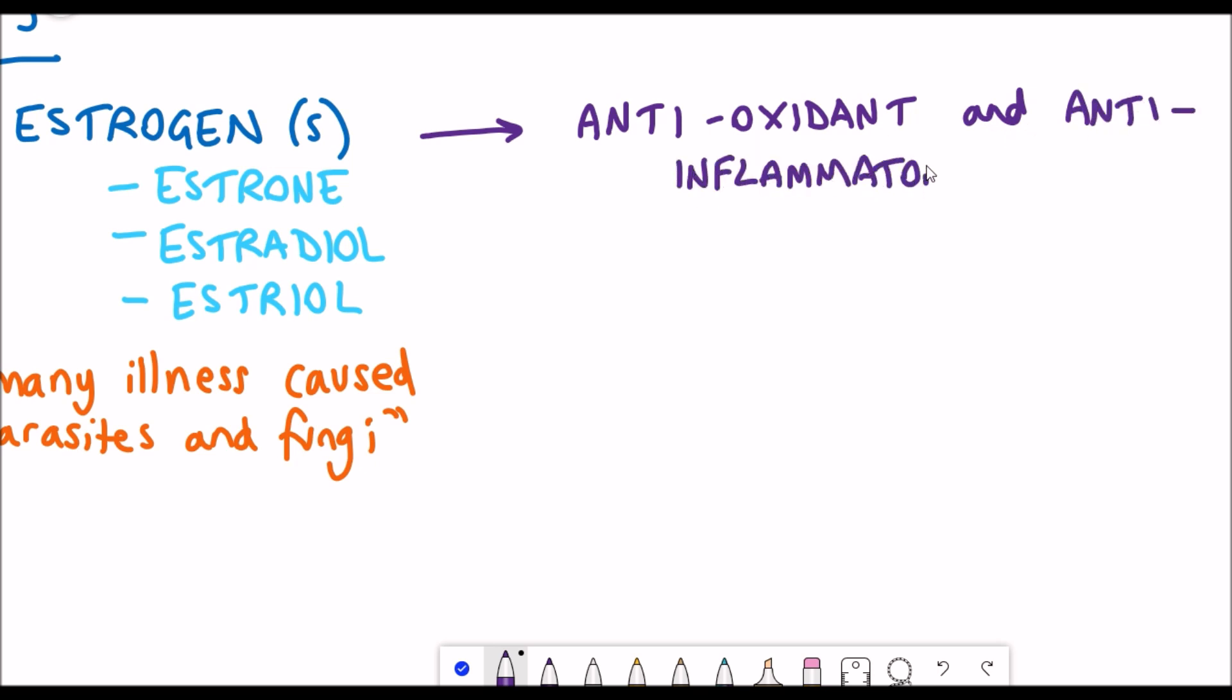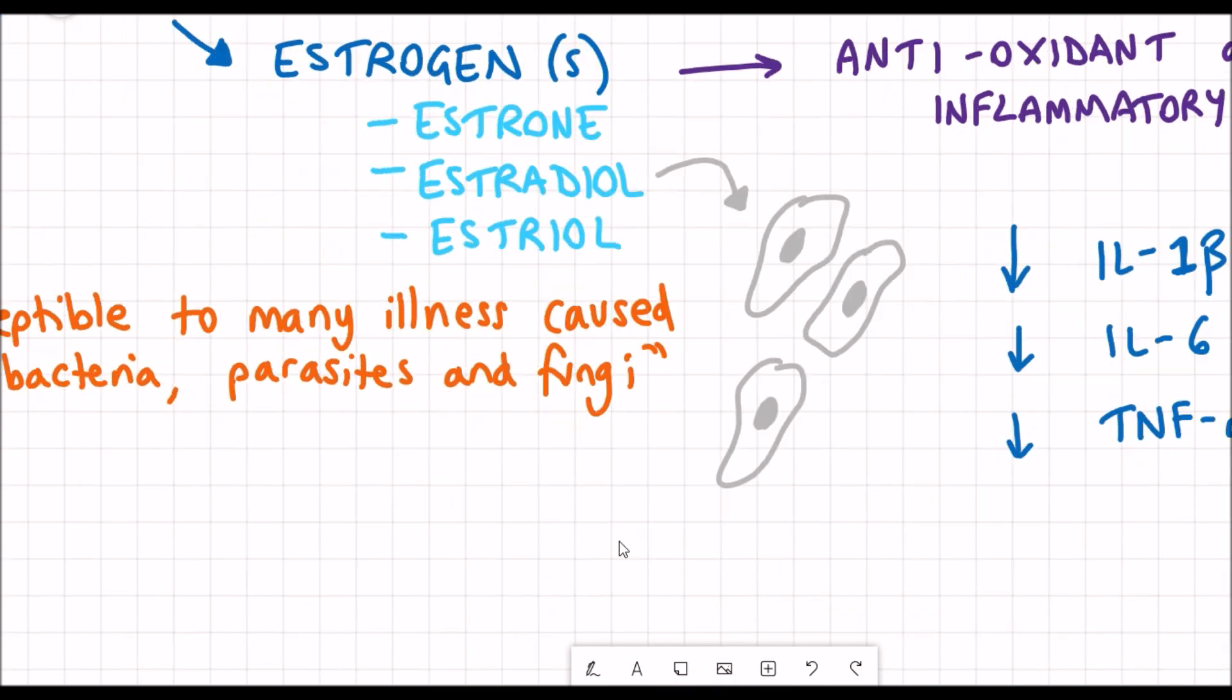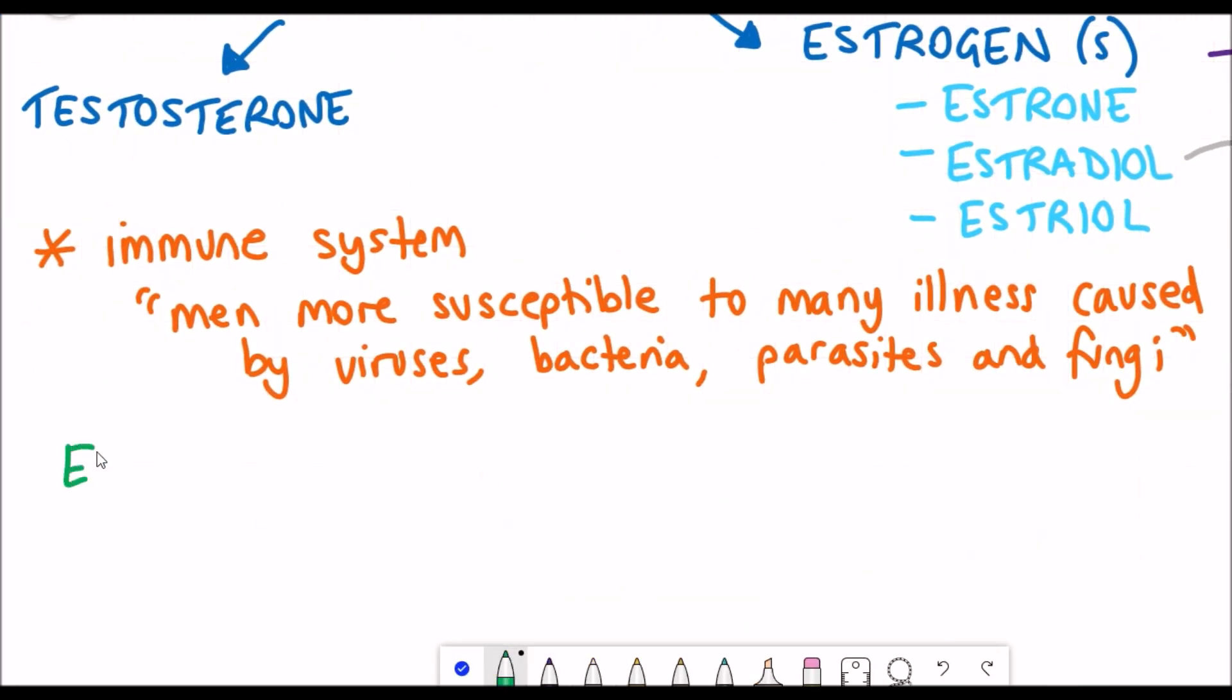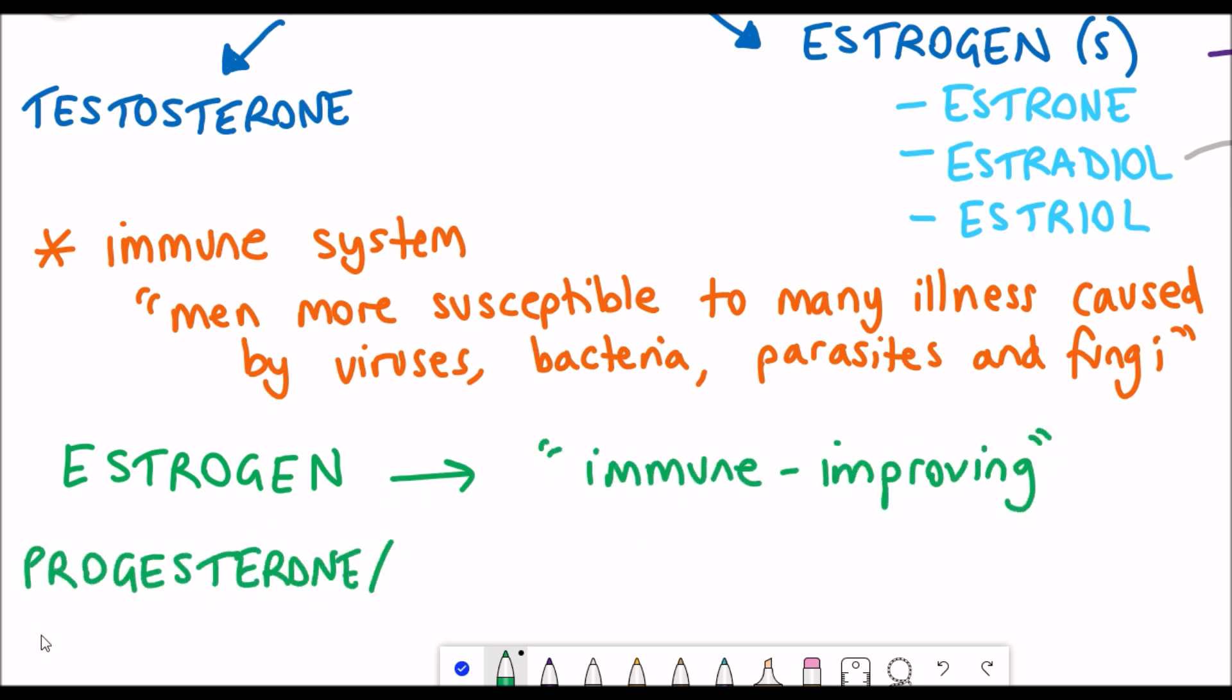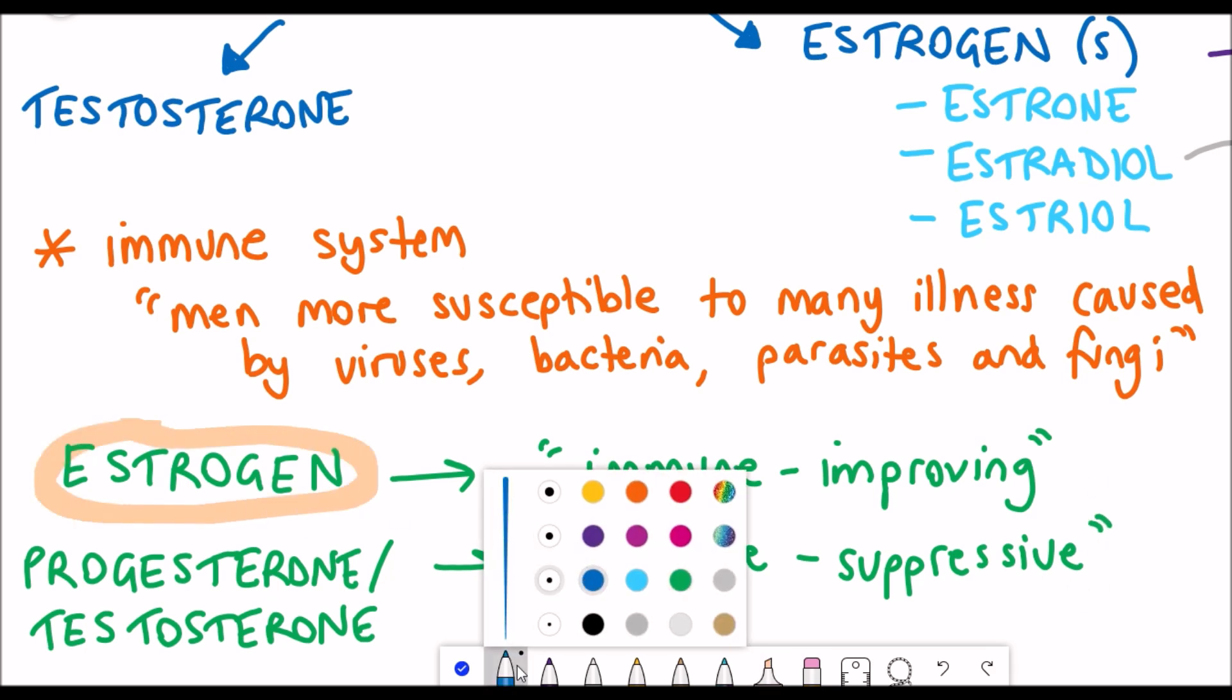Well part of that is potentially due to the antioxidant and anti-inflammatory properties of estrogen. There's been several studies that support this. One in particular took some macrophages, a type of immune cell, and gave estradiol to those cells. What they saw was a reduction in the levels of pro-inflammatory cytokines, and so this included interleukin 1 beta, interleukin 6, and TNF alpha. From these different studies, two general statements can be made: one is estrogen seems to be immune improving, and progesterone, another type of hormone, and testosterone seems to be immune suppressing.